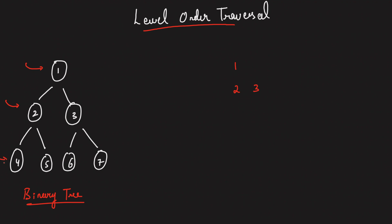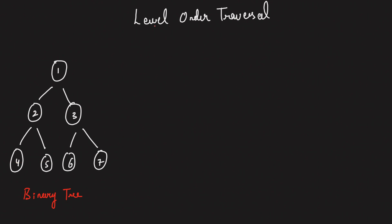Again, if I write down for the third level, first it's going to be 4, then it's going to be 5, then it's going to be 6, then 7. So this is what a Level Order Traversal will be — it's going to traverse in this fashion, then in this fashion, then in this fashion. So you have to print the Level Order Traversal of any given binary tree. In order to print the Level Order Traversal level-wise, what we require initially is a queue data structure.